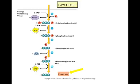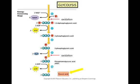Glycolysis literally means sugar splitting. It is a series of ten reactions that generates two molecules of pyruvic acid, the three-carbon molecule that is needed to begin the Krebs cycle. This slide only shows the last five steps of glycolysis, known as the energy conserving stage. Two reductions occur in these last five steps as NAD+ is reduced to NADH and water is produced. Oxidations occur simultaneously with the reductions. ATP is also generated during the energy conserving stage.